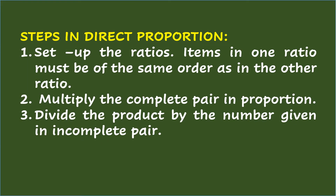Steps in direct proportion: Number 1 — set up the ratios; items in one ratio must be of the same order as in the other ratio. Number 2 — multiply the complete pair in proportion. Number 3 — divide the product by the number given in the incomplete pair.